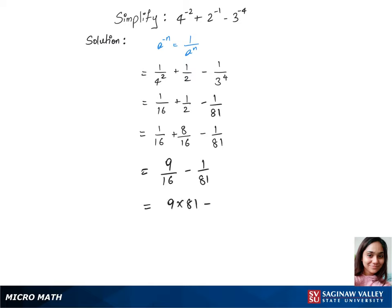Now we will do the LCM for these two fractions. That gives us 9 times 81 minus 1 times 16, over 16 times 81. This gives us the answer 713 over 1296. That's our final answer.